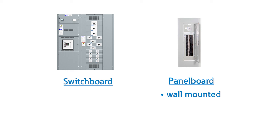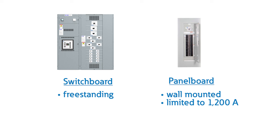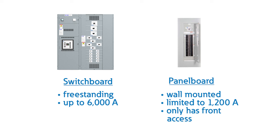What is the difference between switchboards and panel boards? The first thing you would notice is that panel boards mount on the wall, and switchboards are freestanding. Panel boards are designed to UL67 and are typically limited to a maximum of 1200 amps, while switchboards can contain busing and overcurrent devices up to 6000 amps.